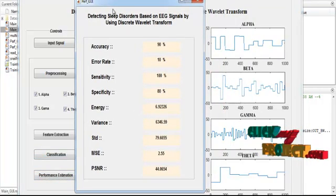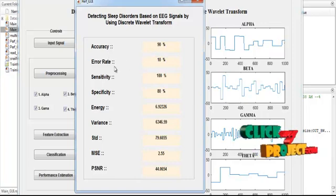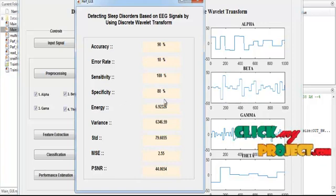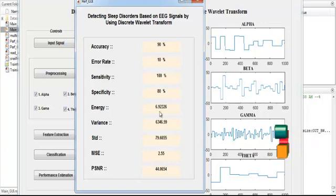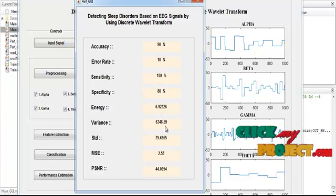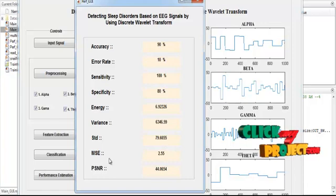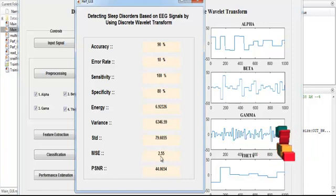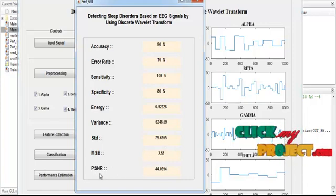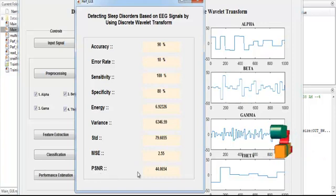In this performance estimation, the accuracy is 90%, error rate is 10%, sensitivity is 100%, specificity is 80%, energy value is 6.9326, variance is 6346.10, standard deviation is 79.6635, the MSE, mean square error, is 255, and the PSNR, peak signal to noise ratio value, is 24.0644. This is the overall performance results shown in this table.